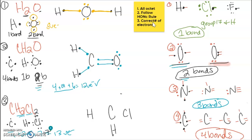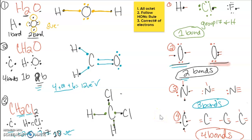Carbon is going to share all four electrons — one with each halogen and hydrogen. Hydrogen shares one, and chlorine also shares one since its other electrons are already paired off; it has three lone pairs. Carbon has one, two, three, four bonds — four singles. Each hydrogen has one bond following the HONK rule, and each chlorine has one bond following the HONK rule. We add three lone pairs to each chlorine. This is CH₂Cl₂.